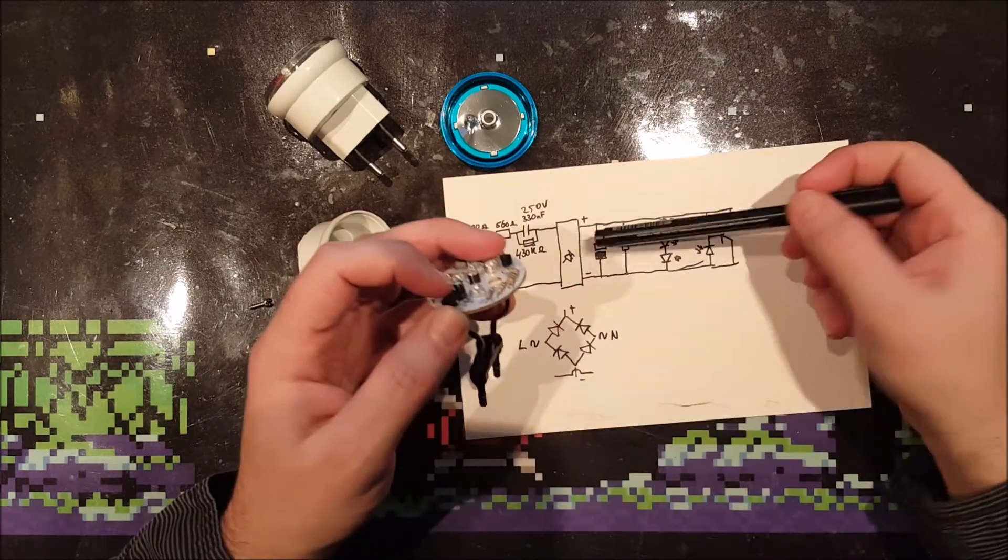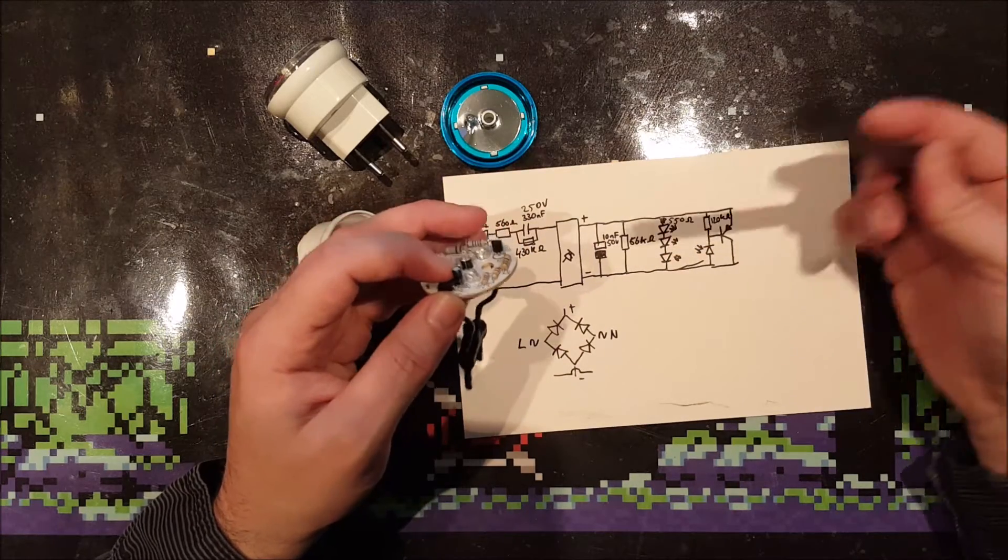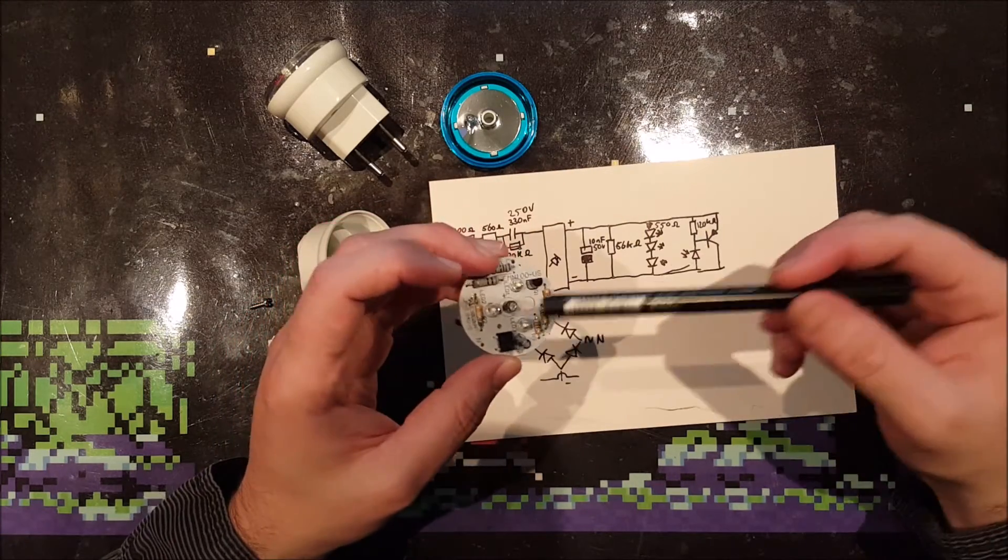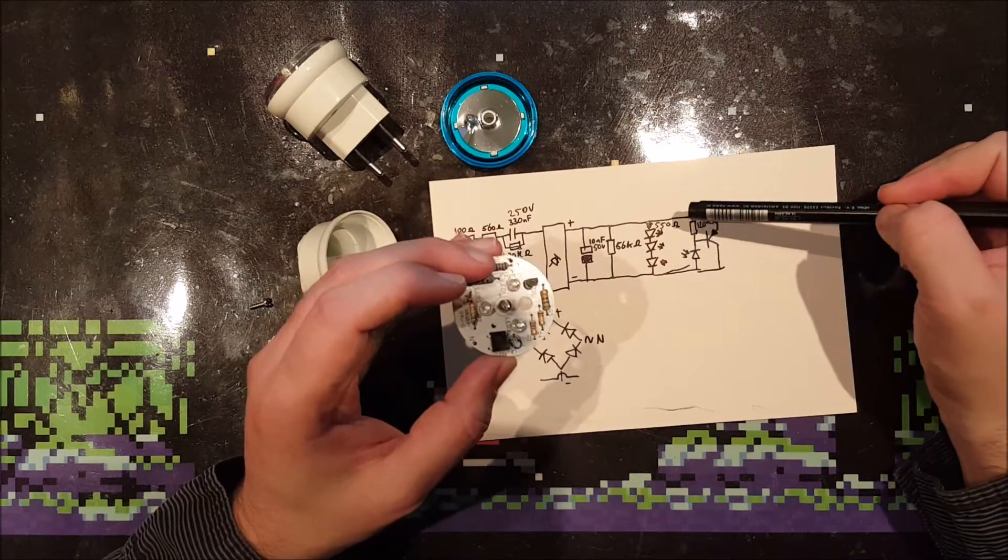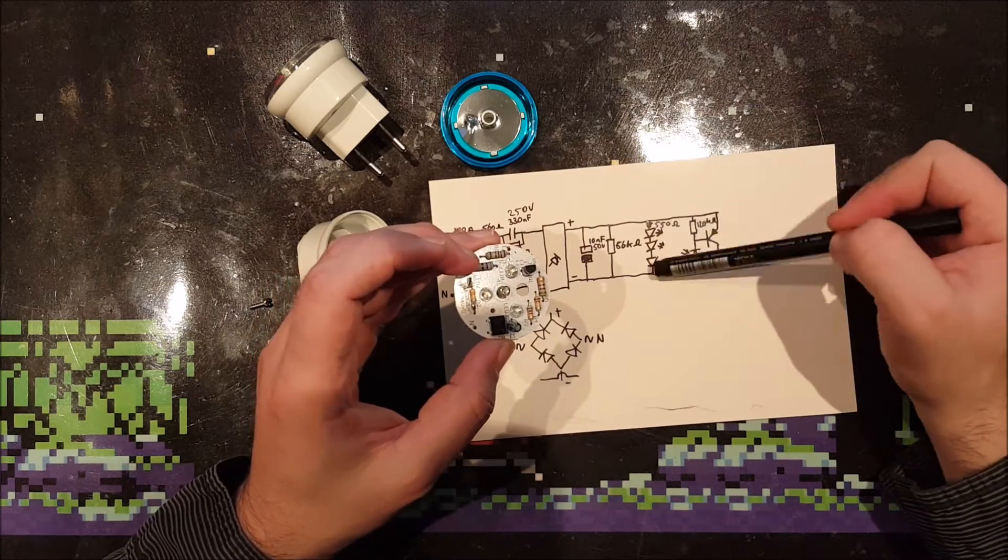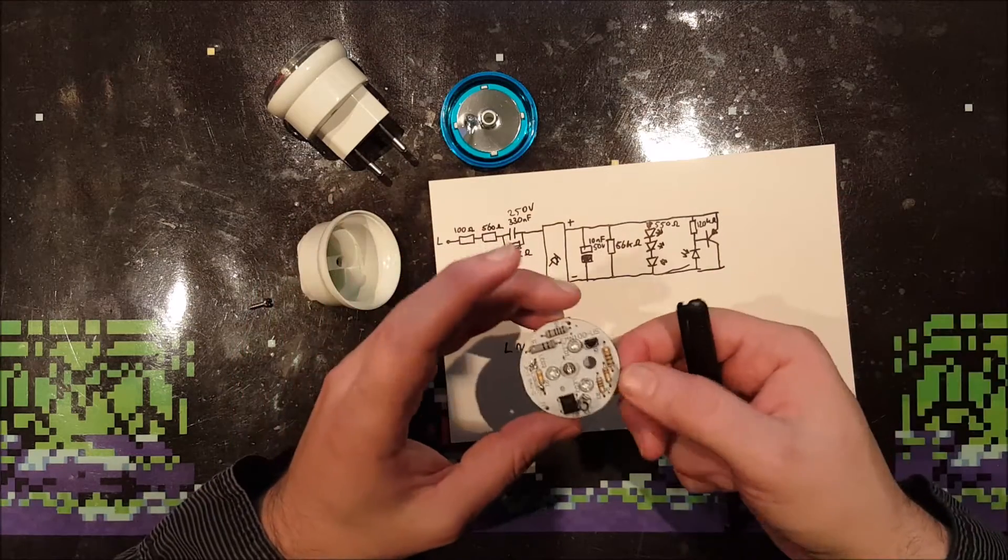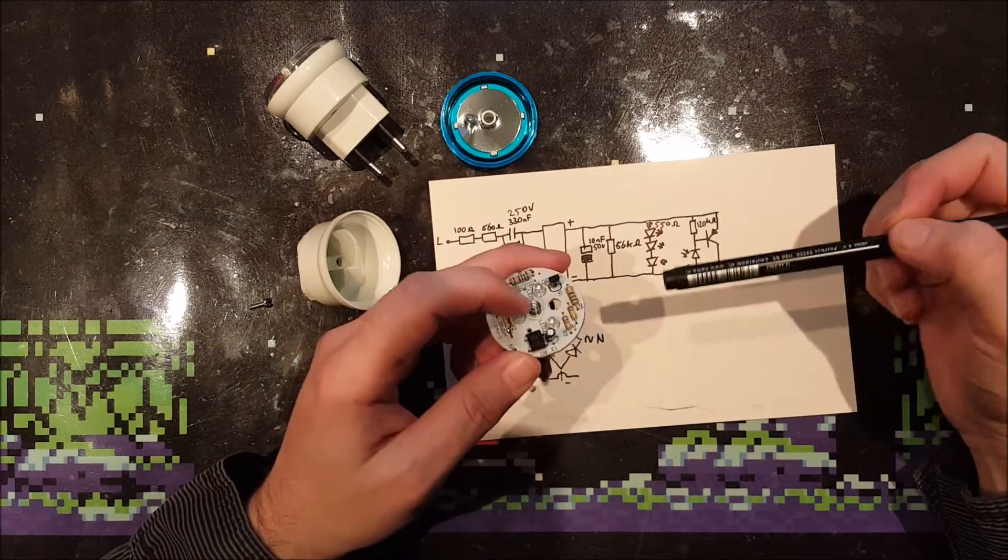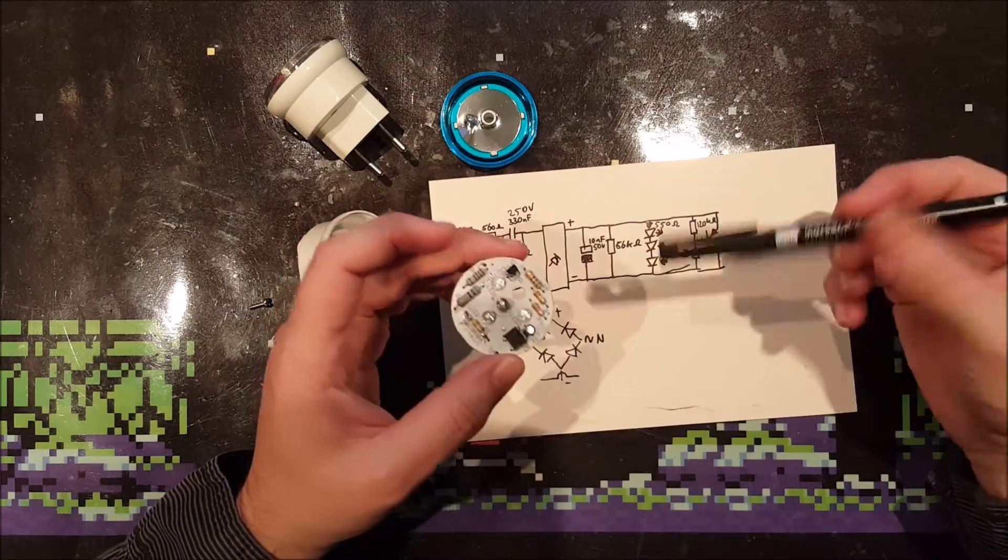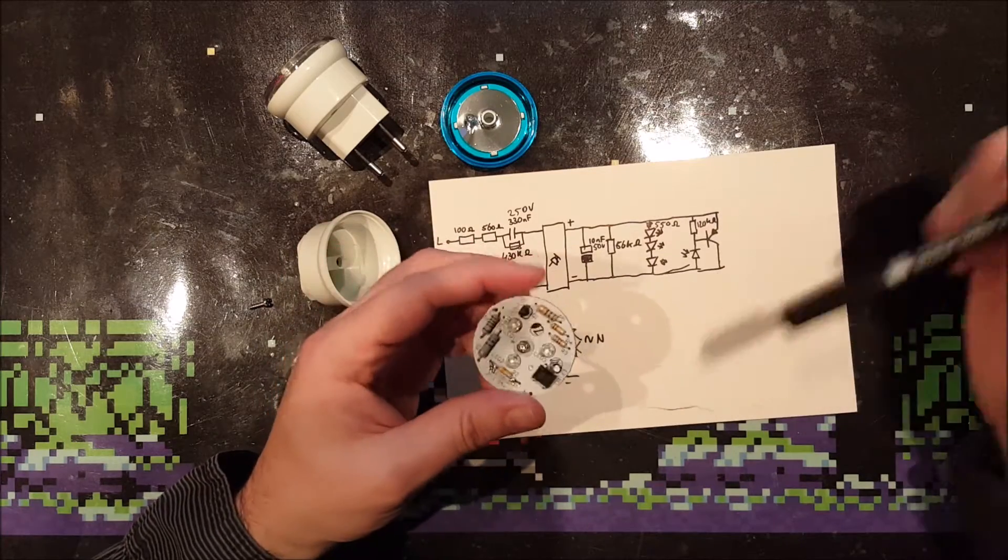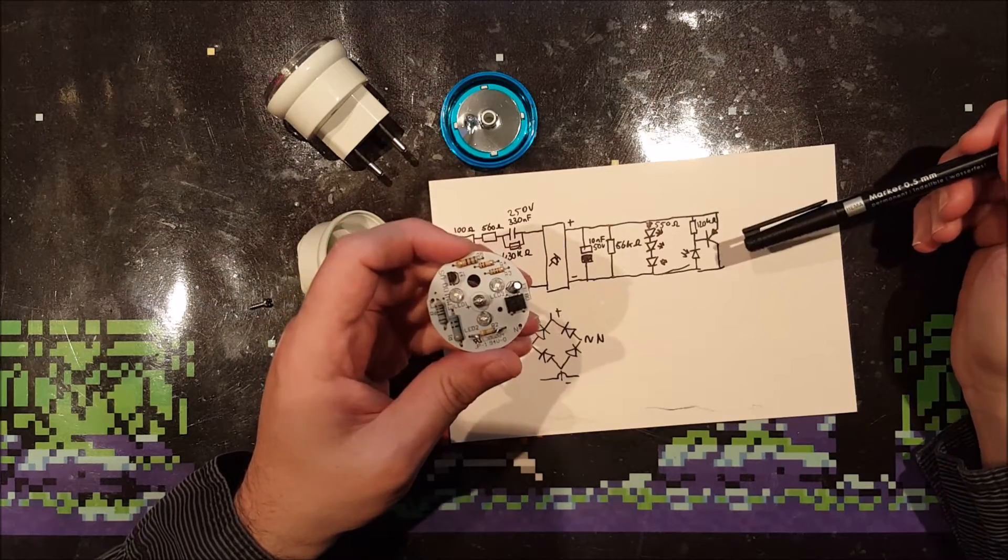There is this tiny electrolytic capacitor over here. 10 microfarads. 50 volts. Another discharge resistor at 65 kilo ohms. Then there are the three LEDs in series. So they are probably using around 9 volts. And I forgot to draw it. But there is actually another limiting resistor there at 550 ohms. And then there is this switching part. Which makes the lights go on when it's dark. And stop them from lighting when it's lit in the room.